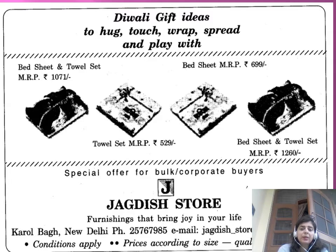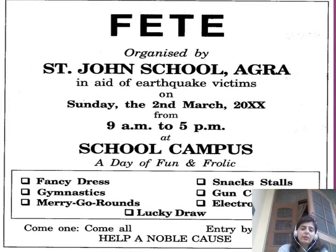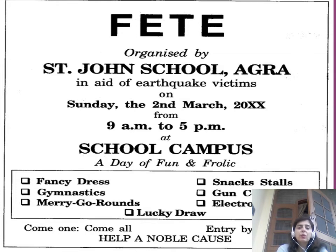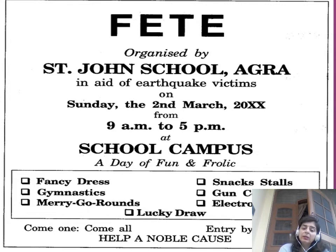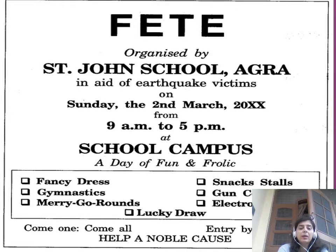This is a display advertisement for a school fete — an event where students run food stalls and game stalls and people from different schools come for fun. For Saint John School's fete: date Sunday 2nd March, time 9 AM to 5 PM, venue school campus. Attractions include fancy dress, gymnastics, merry-go-rounds, game stalls, gun counter, electronic display, and lucky draw. Mention entry fee and the noble cause it supports.